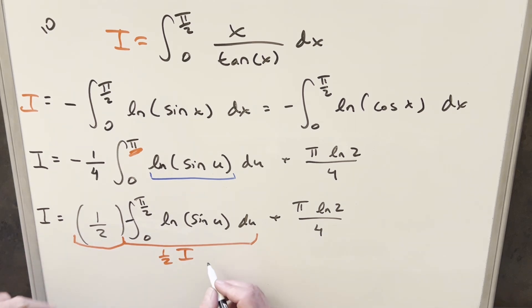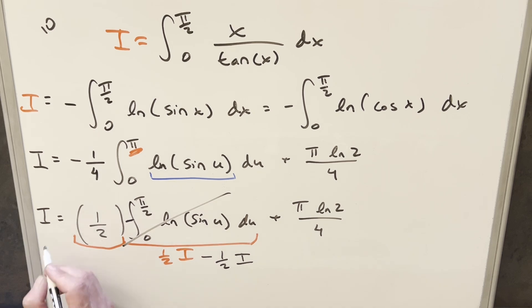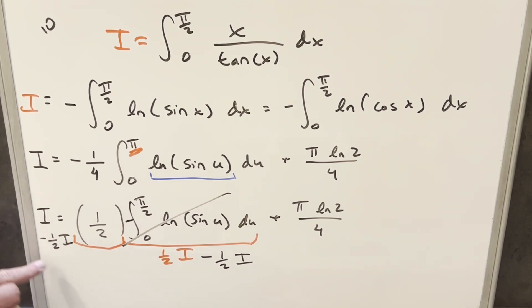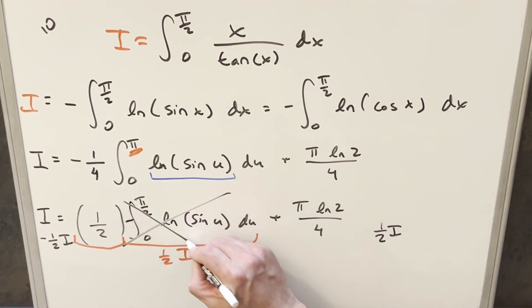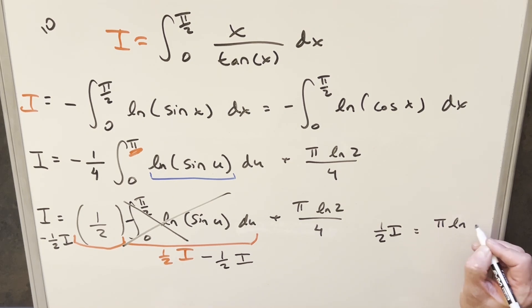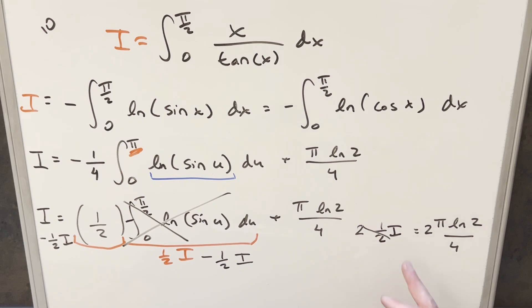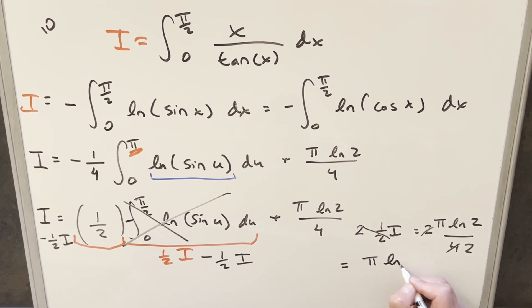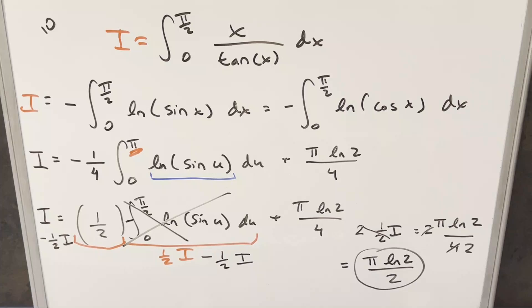To isolate i, multiply both sides by 2. The 2 cancels with the 4, and we get our final answer: i = π·ln(2)/2. That's the solution to the integral from 0 to π/2 of x/tan(x) dx. Good one from the Berkeley Math Tournament — thanks everyone for watching, have a good day.